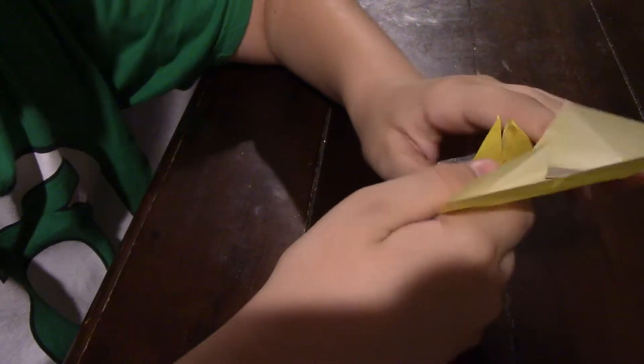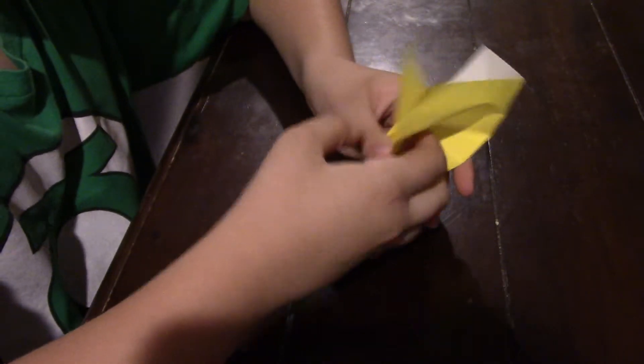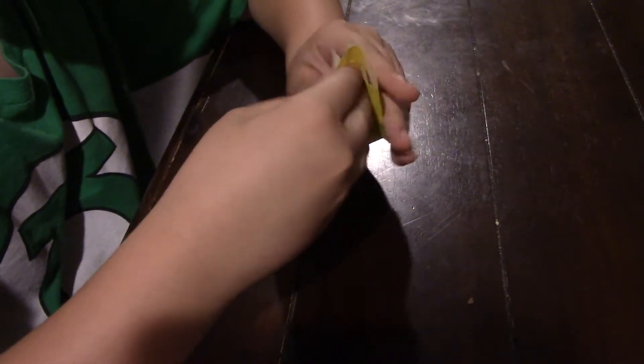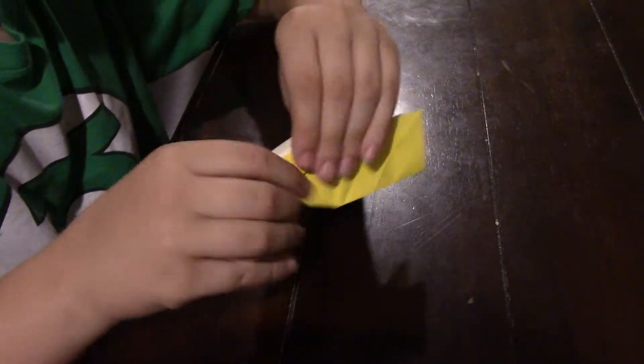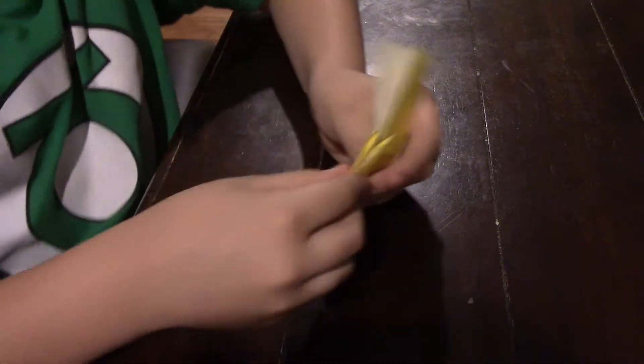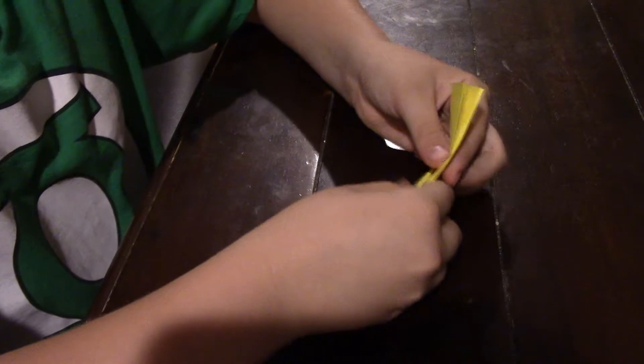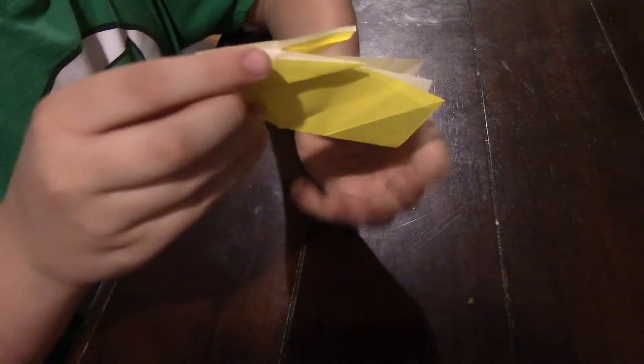Now fold it in half like this, all the way down through the head. And now you can see the rabbit coming into shape.